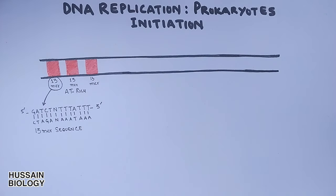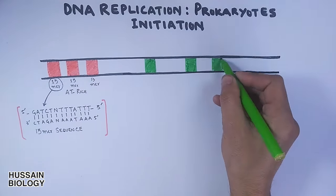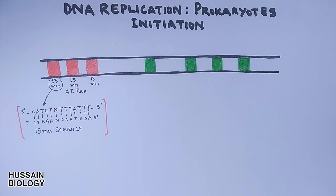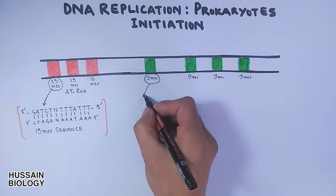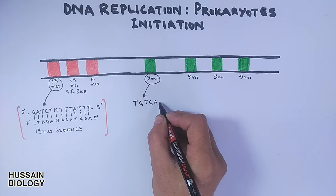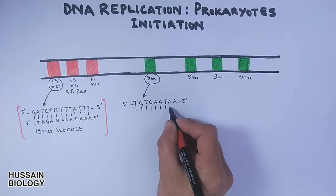On the right we have four green bands which denote a particular nucleotide sequence called the 9mer. There are four 9mer sequences at the OriC site with a particular nucleotide sequence of nine base pairs. All four 9mer sites have this sequence: thymine, guanine, thymine, guanine, adenine, adenine, adenine, thymine, adenine, adenine, and its complementary bases.